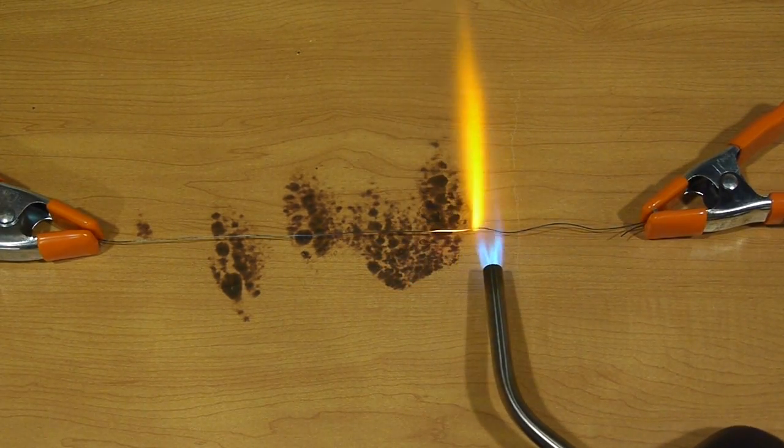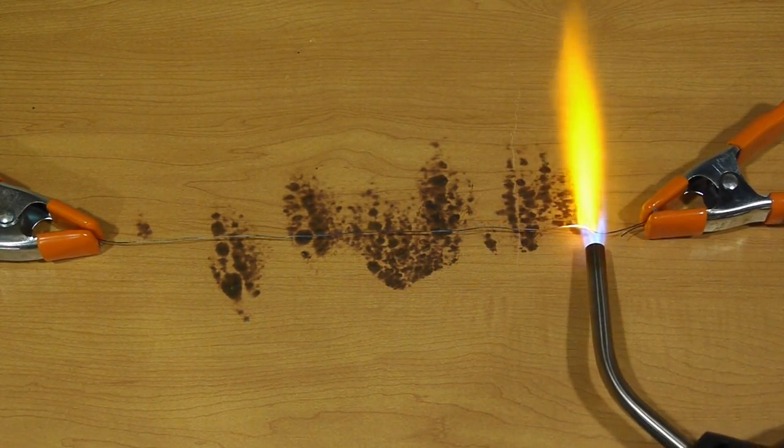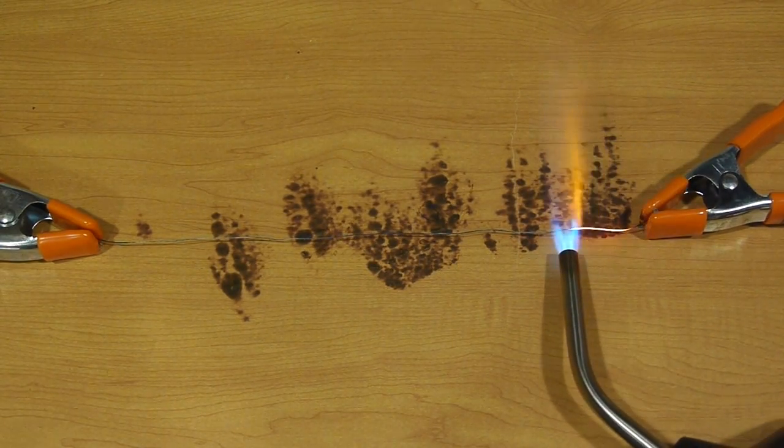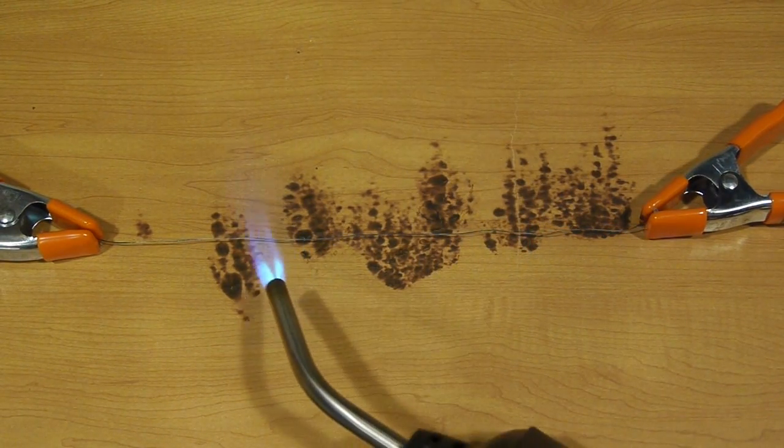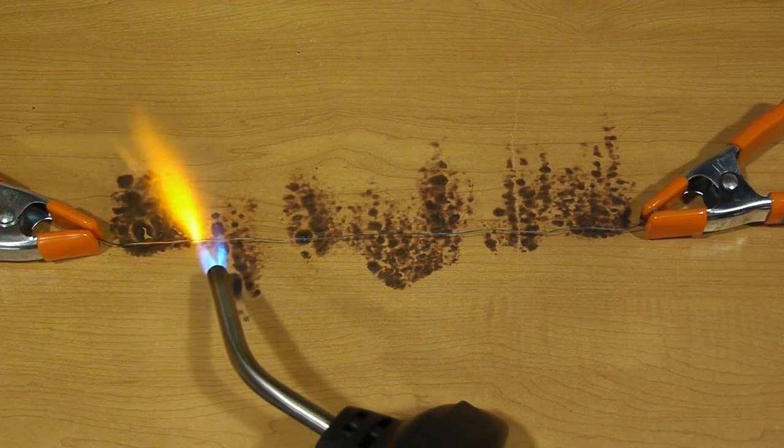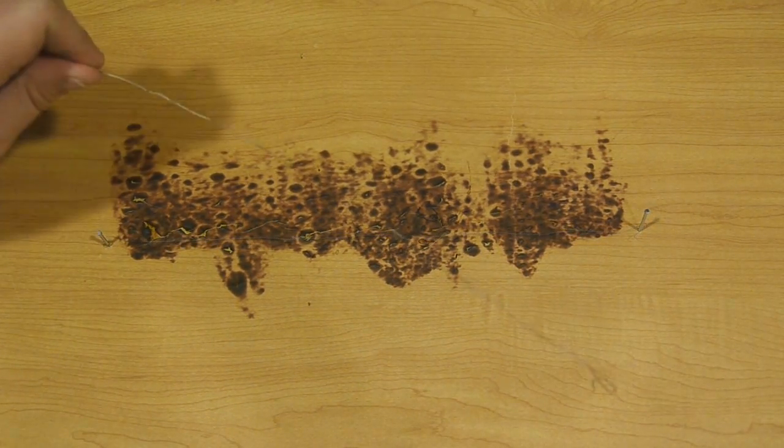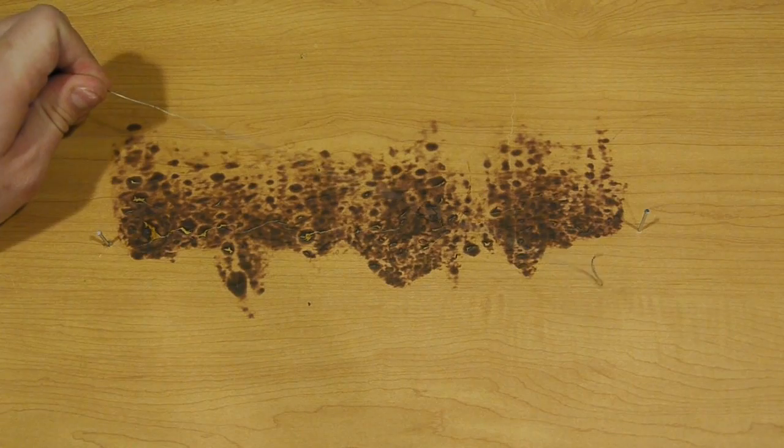So later we should be able to get a more straightened wire after we crumple it up. Alright, looking good. Let's go ahead and remove the clamps. The wire is somewhat straight.